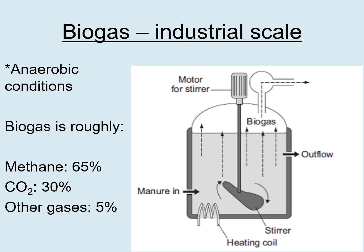Biogas is produced under anaerobic conditions. Waste from farm animals — horses, chickens, and cows — has their manure collected, usually mixed with water, and it goes into a biogas fermenter. In this industrial-scale diagram, manure and water go in together so the stirrer doesn't get jammed. A heating coil keeps conditions warm at about 30 degrees Celsius, which is the best temperature for anaerobic respiration. The container is completely sealed so no air can get in, and the stirrer keeps bacteria well distributed inside.